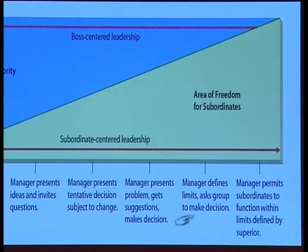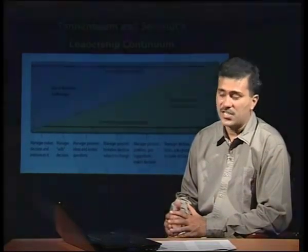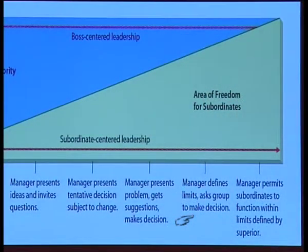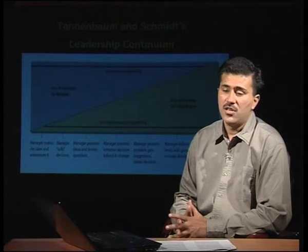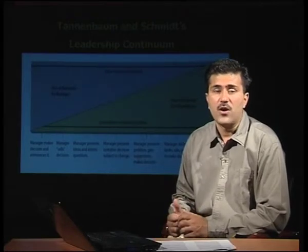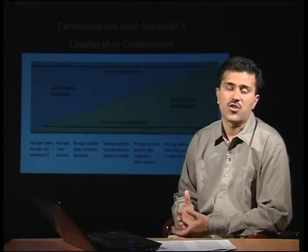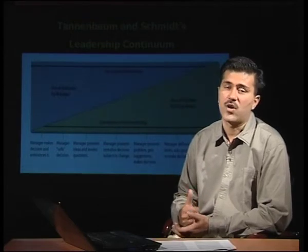Step six: the manager defines limits and asks the group to make a decision, giving complete autonomy to the group. The last step is consultative: the manager permits subordinates to function within limits defined by superiors, providing a framework within which they decide and act. This continuum is very useful because there are instances where we need to provide autonomy to staff and other times where we must exercise authority ourselves.